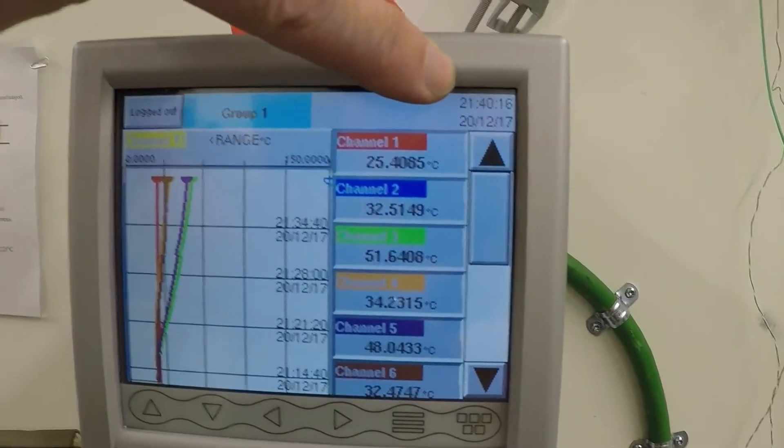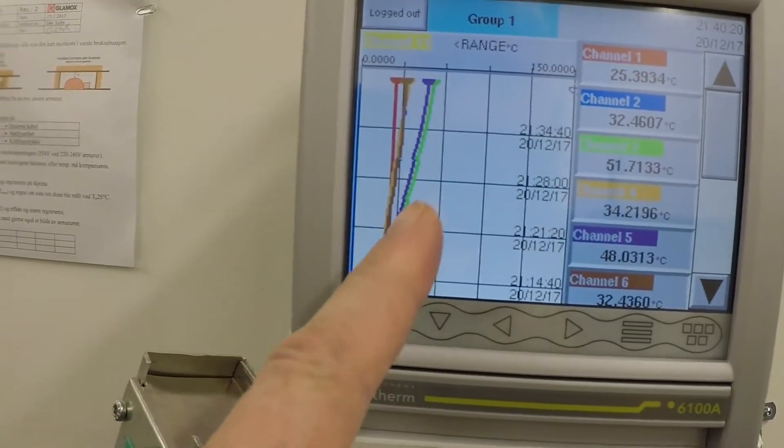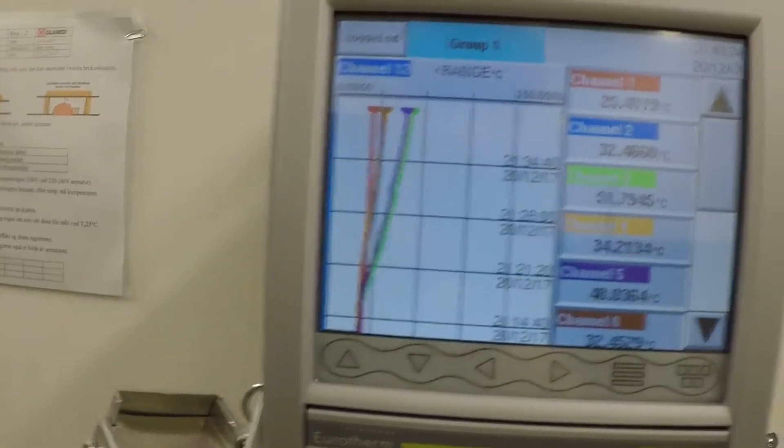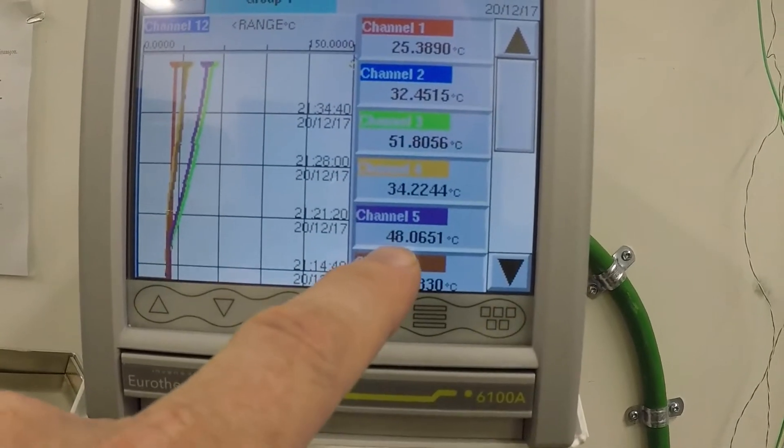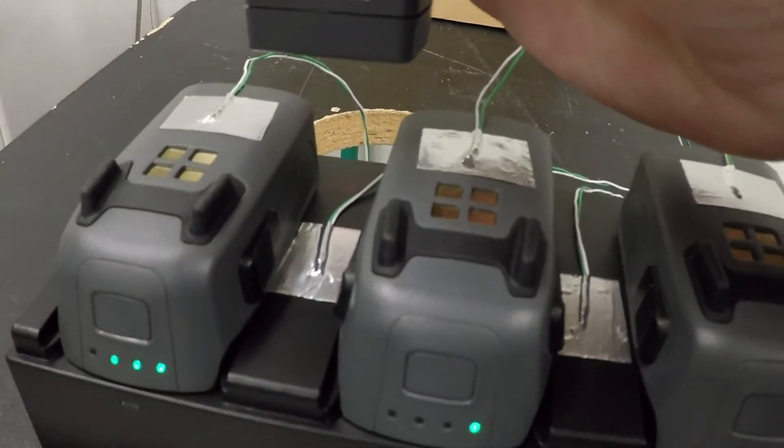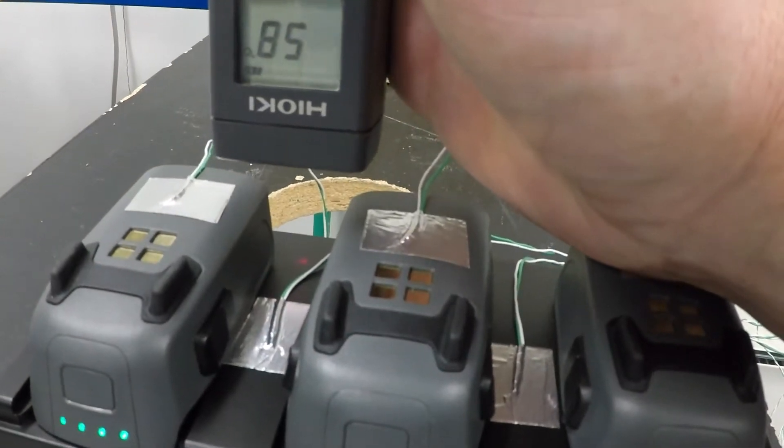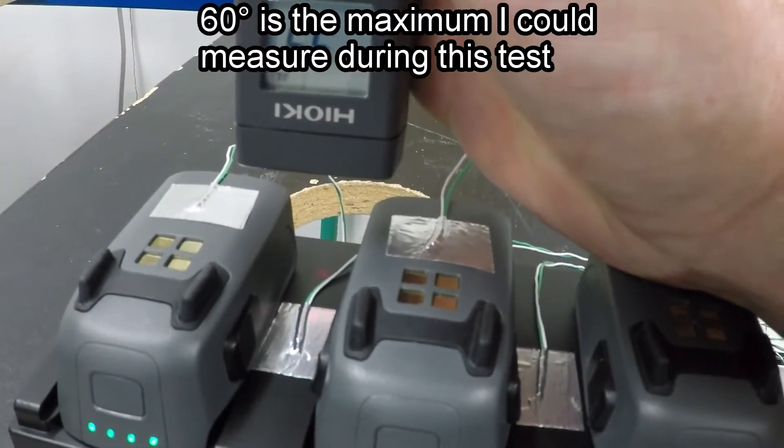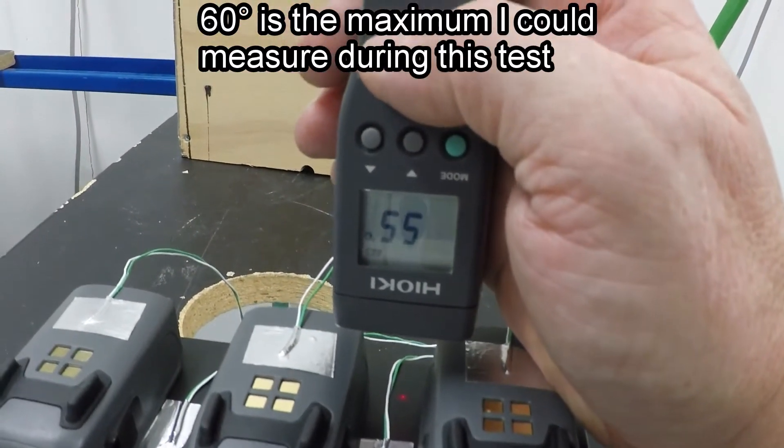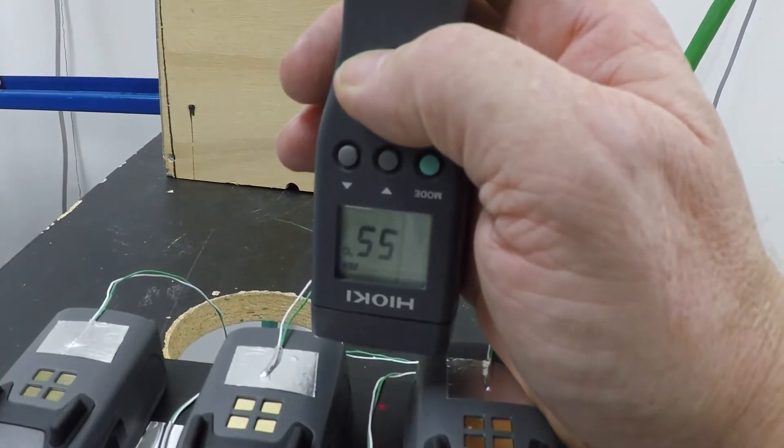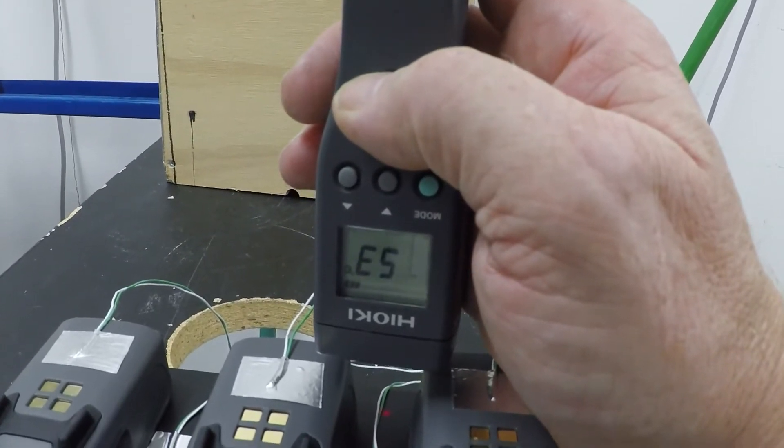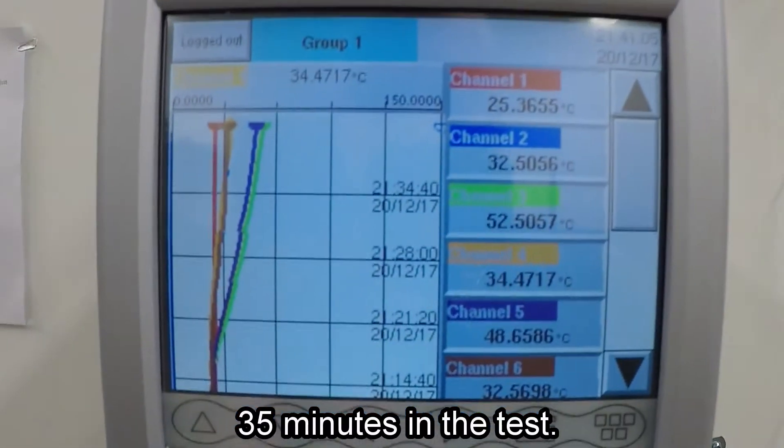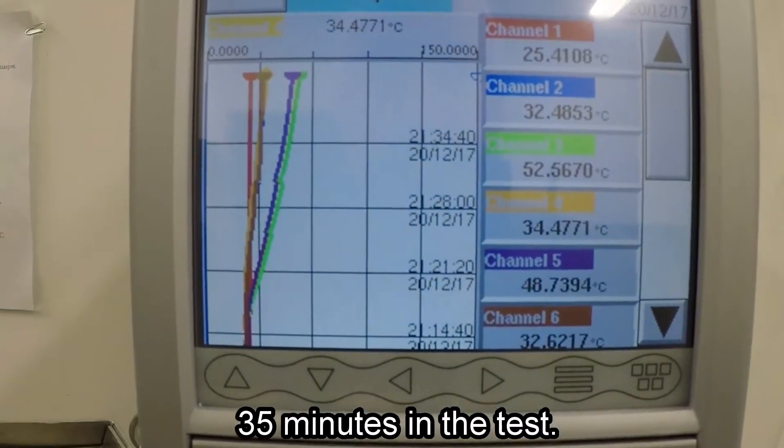Everything is still charging. The time is now 21:40. So 5 minutes left to the half an hour. The temperature has still been rising but it seems to be a little less rising. 51 degrees, 48 on the other one. Let's see what this laser pointer says. This one says it's about 59 degrees, close to 60 then. And this side a little colder. But we will wait until it stops. We'll see how high it gets.